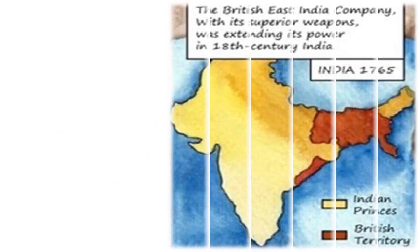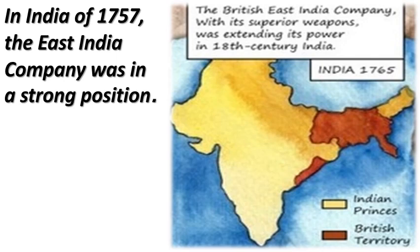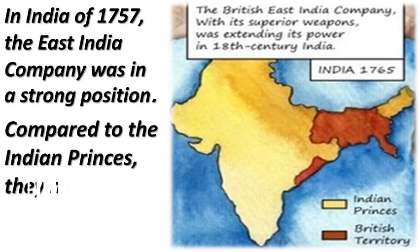The British East India Company had superior weapons — meaning the latest weapons and guns — whereas Indian princes used to fight with swords and spears. In India of 1757, the East India Company was in a strong position compared to the Indian princes due to their superior weapons. Here, 'they' refers to the British East India Company.